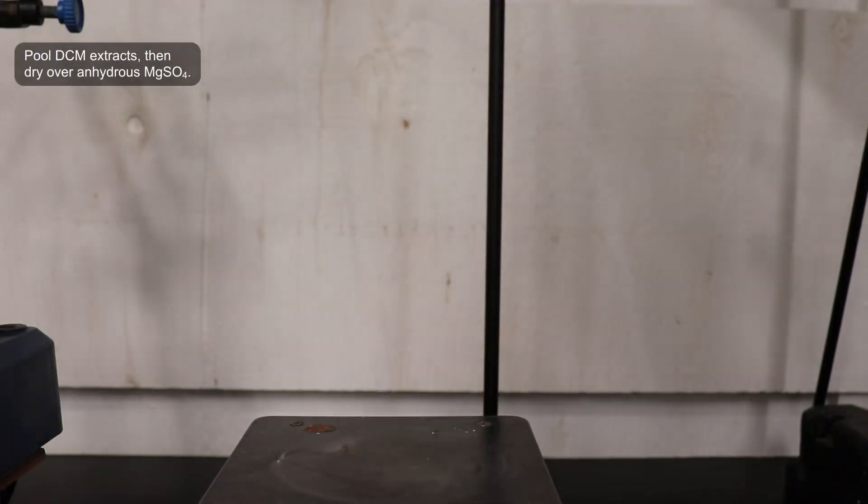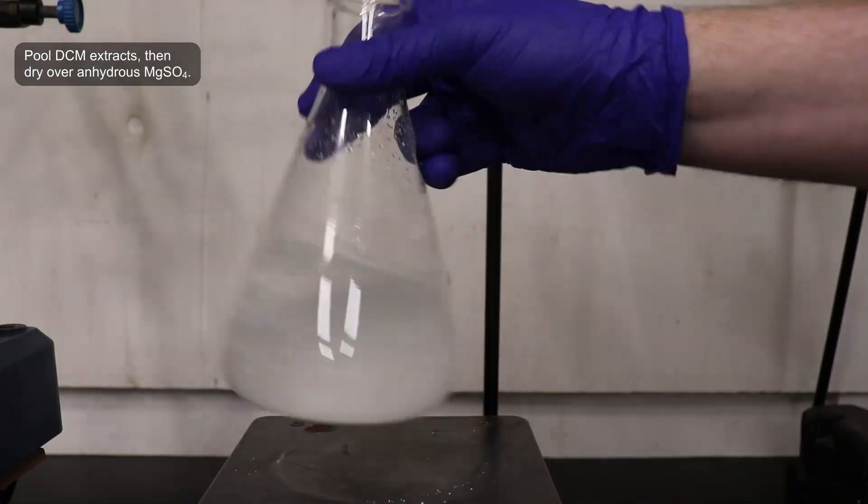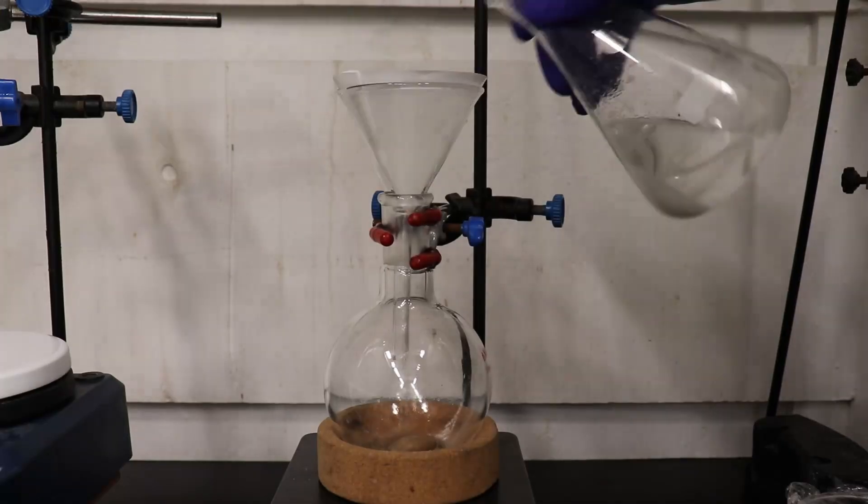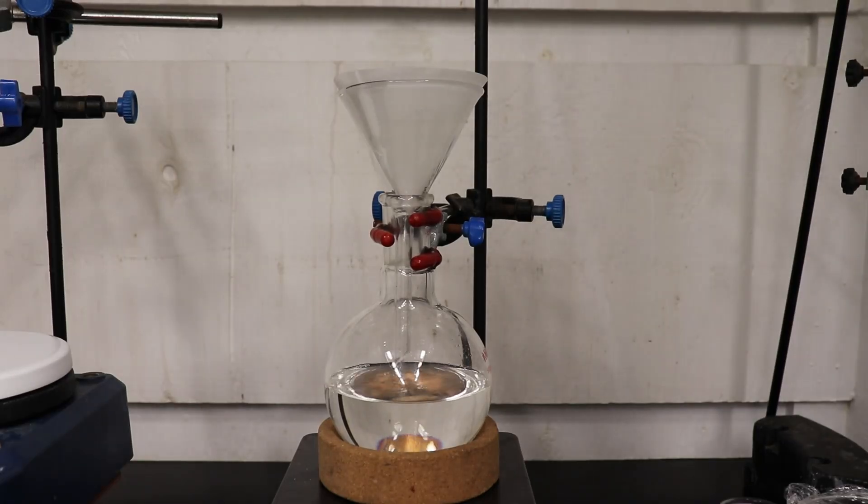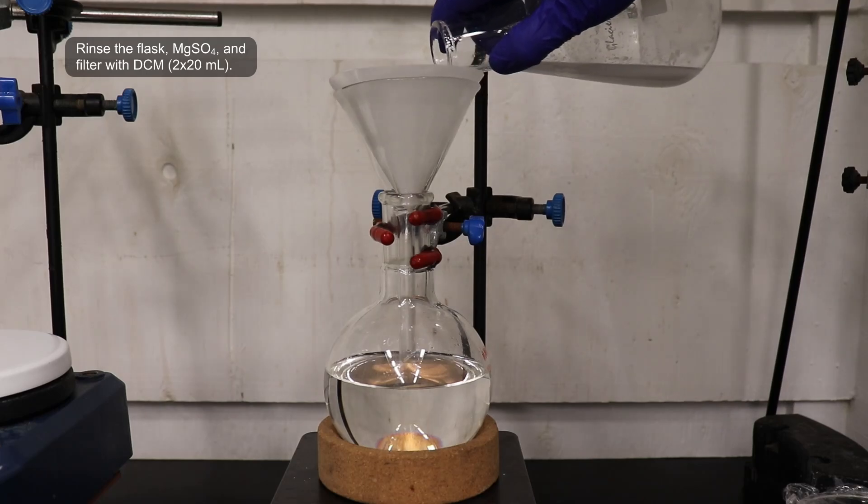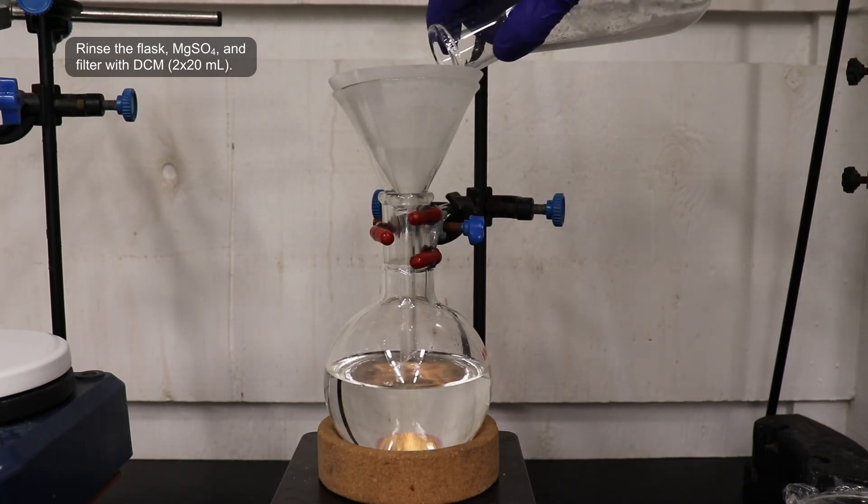The 3 DCM extracts were then pooled together, and dried over anhydrous magnesium sulfate. This solution was then filtered into a 500 mL round bottom flask, and the residual magnesium sulfate was washed with 2 20 mL portions of DCM, to ensure a quantitative transfer.